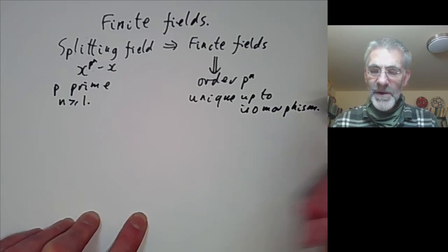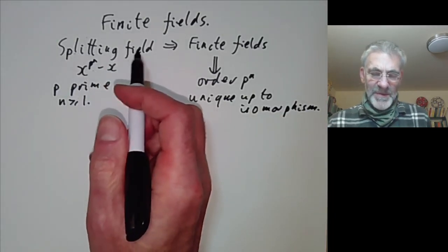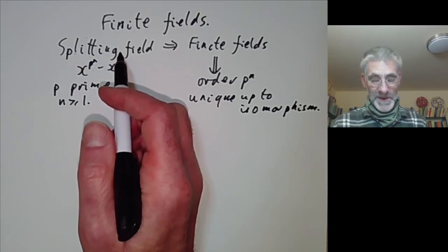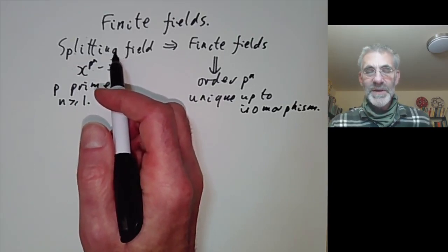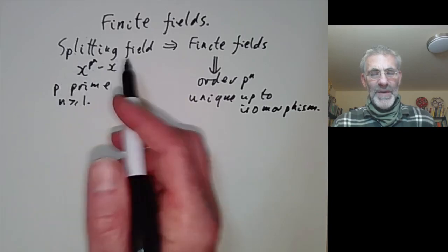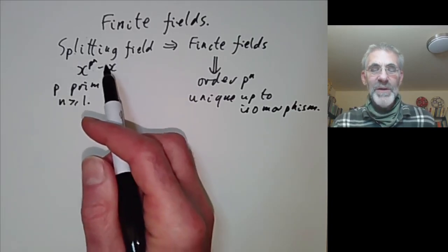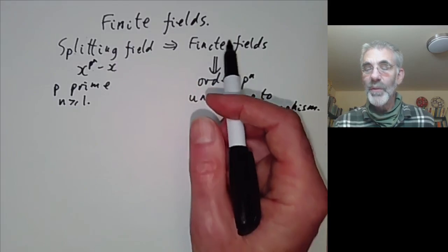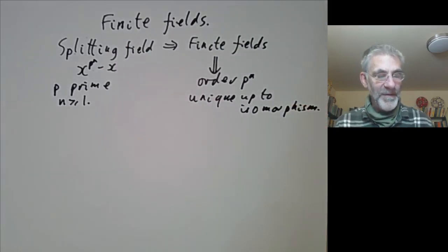Recall that splitting fields are unique in some sense but not really — there is a certain amount of ambiguity about what you mean by the splitting field, and we will find this problem turning up when we try to write down finite fields explicitly.